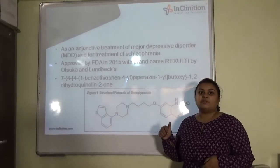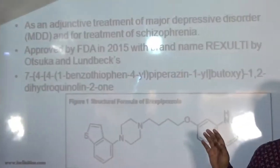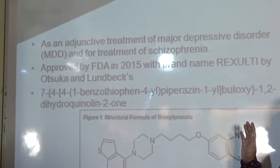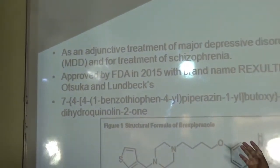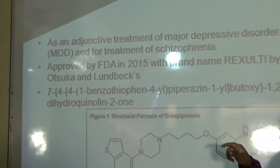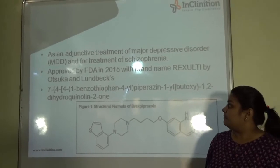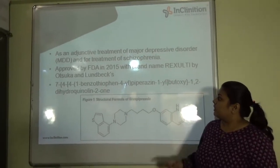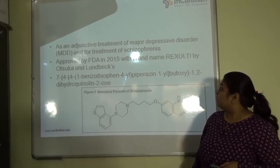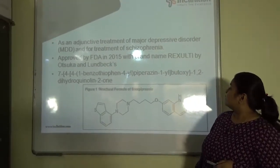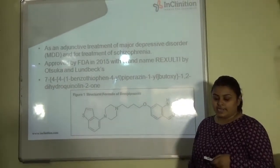Brexpiprazole is basically used as an adjunct therapy for major depressive disorders, as well as for the treatment of schizophrenia. It was approved by the FDA in July 2015. Its brand name is Rexulti, by Otsuka and Lundbeck. The chemical formula is 7-{4-[4-(1-benzothiophen-4-yl)piperazin-1-yl]butoxy}-3,4-dihydroquinolin-2(1H)-one. The structure of the drug is given on the slide.